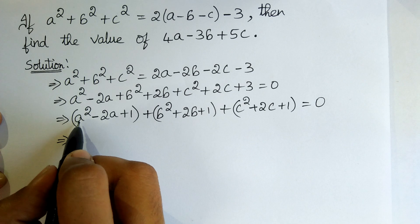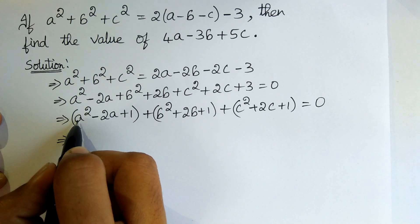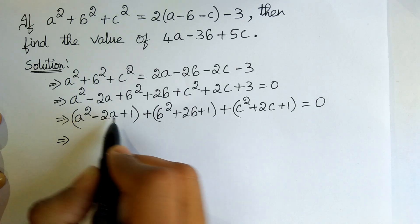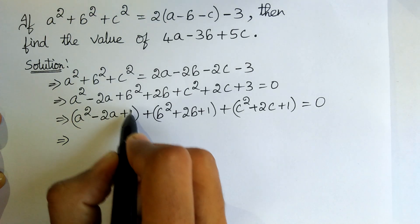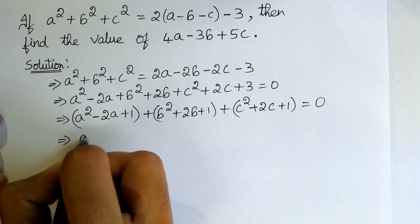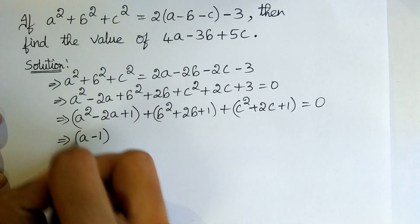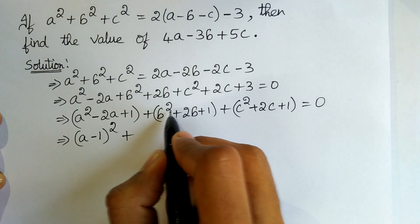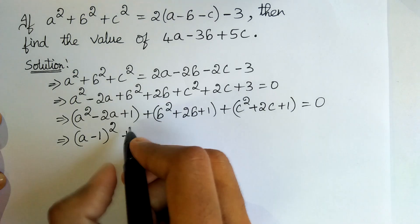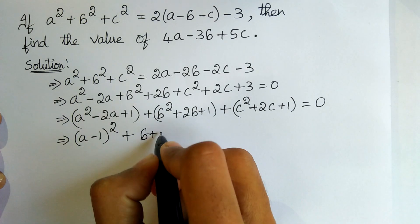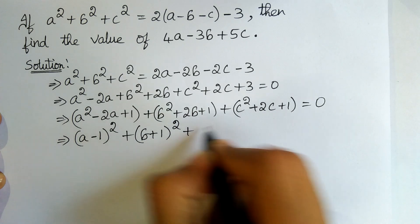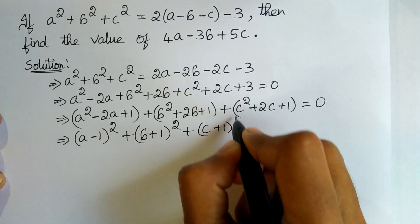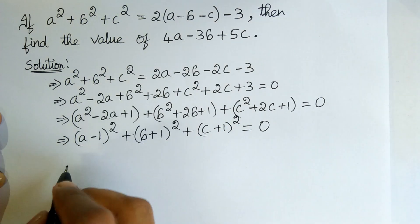Now, this is in the form (a - 1)², since a² - 2a + 1 = (a - 1)². Likewise, b² + 2b + 1 = (b + 1)², and c² + 2c + 1 = (c + 1)². So we have (a - 1)² + (b + 1)² + (c + 1)² = 0.